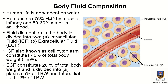The extracellular fluid is divided into plasma, which is found inside blood vessels, and interstitial fluid, which is found between cells. Plasma constitutes 5 percent and interstitial fluid constitutes 15 percent of total body weight.